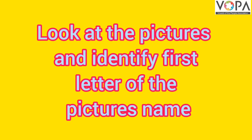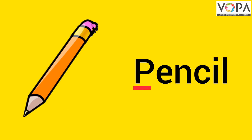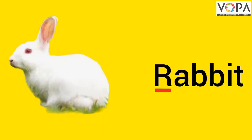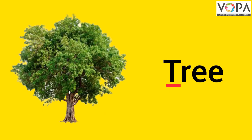Look at the picture and identify the first letter of the picture's name. O for orange, P for pencil, Q for queen, R for rabbit, S for sun, T for tree.